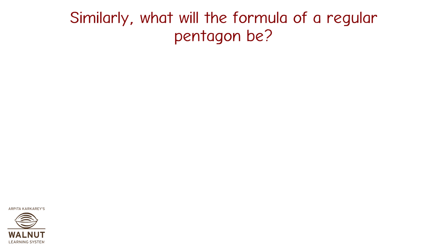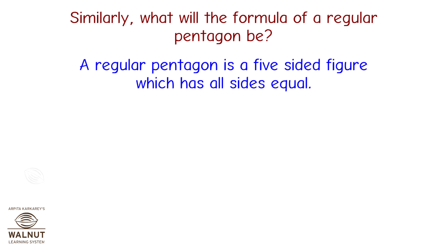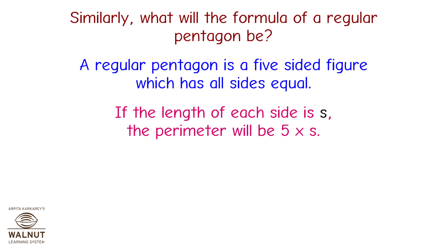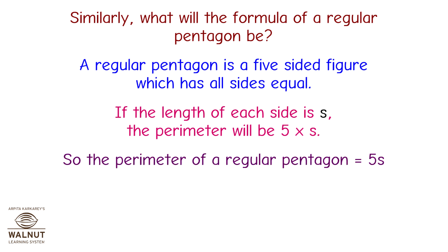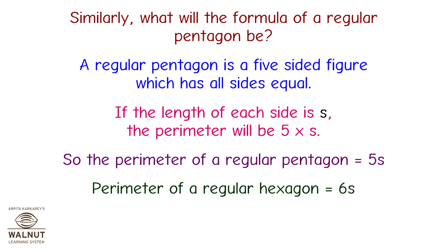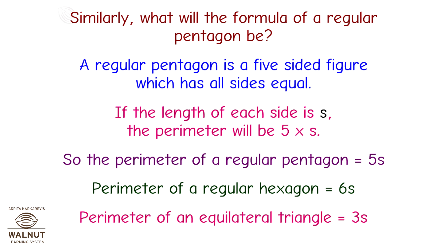Similarly, what will the formula of a regular pentagon be? A regular pentagon is a five-sided figure which has all equal sides. If the length of each side is S, the perimeter will be 5S. So the perimeter of a regular pentagon is 5S. The perimeter of a regular hexagon is equal to 6S. The perimeter of an equilateral triangle is equal to 3S.